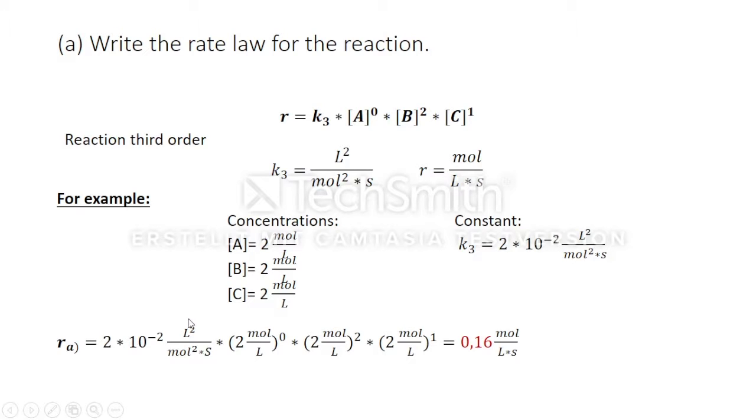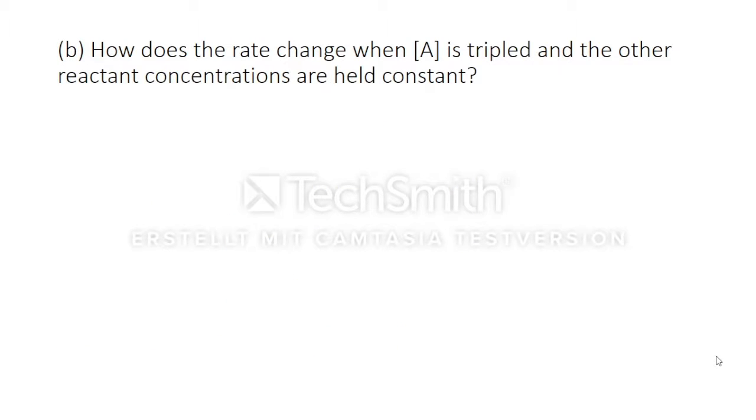The rate of this example can be calculated to zero point one six mole per liter second. So how does the rate change when A is tripled and the other reactant concentrations are held constant?